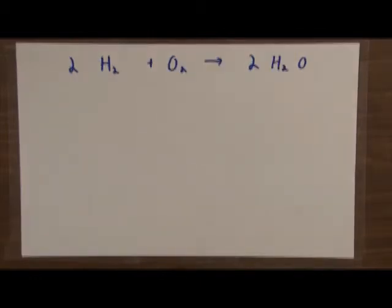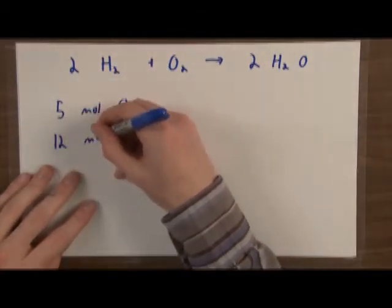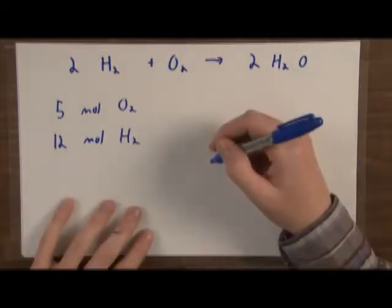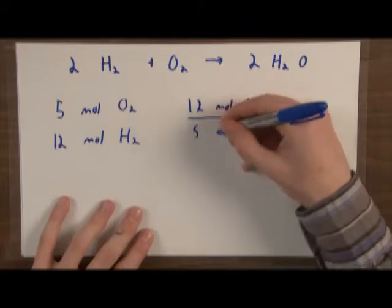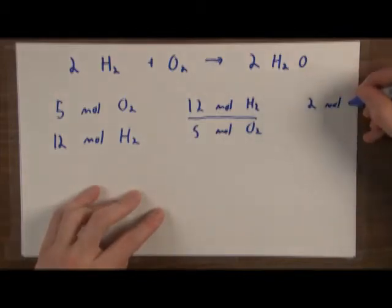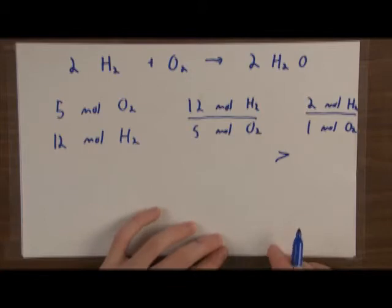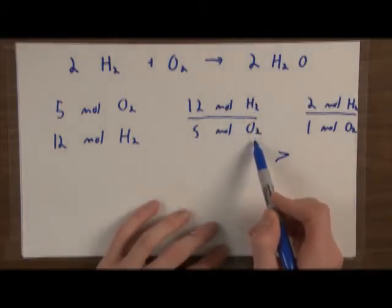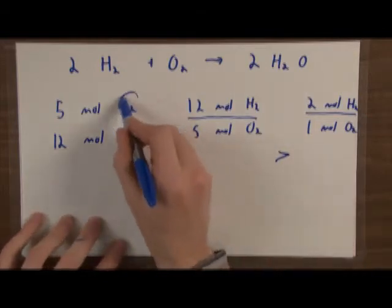Let's analyze another example — in this case, oxygen is going to be our limiting reagent. Let's say we have five moles of O2 and 12 moles of H2. We write 12 over 5 and compare it to our molar ratio of 2 over 1. The left side is greater, meaning we have H2 in excess relative to O2. Because H2 is in excess, O2 is our limiting reagent.